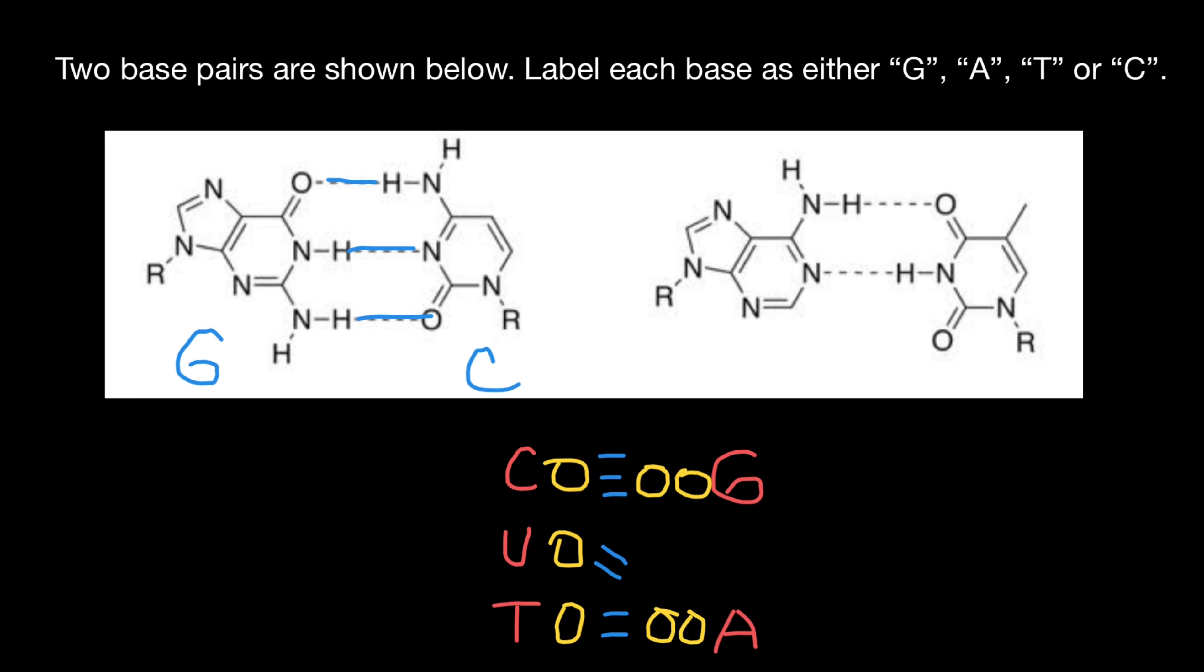And now let's take a look here. We have here double bond and we have one base with one ring. So now we know that this is thymine and another base with two rings. So now we know that this is adenine.